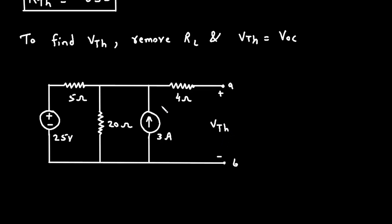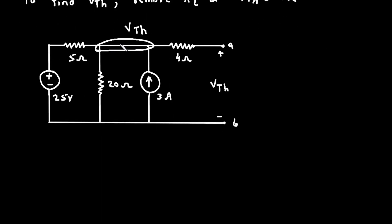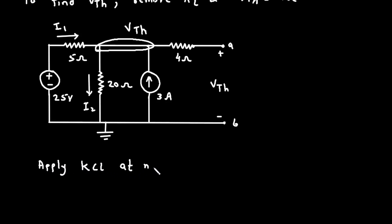Now we have to find this voltage. The voltage across the 3 ampere current source will be VTH — this is one combined node. So this will be our VTH. What we will do is use Kirchhoff's current law. Let's assume this is a reference node or ground node, and let's say this is current I1 and this is current I2. Now let's apply KCL at node VTH.